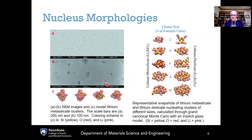So this assumption of the spherical nucleus isn't necessarily a good one. And in fact, if we compare the shapes of these nucleating clusters to electron micrographs of nucleating clusters for the same system—this is for lithium metasilicate—you can see that the experimental shapes are much more in line with these simulation shapes, being rather non-spherical.